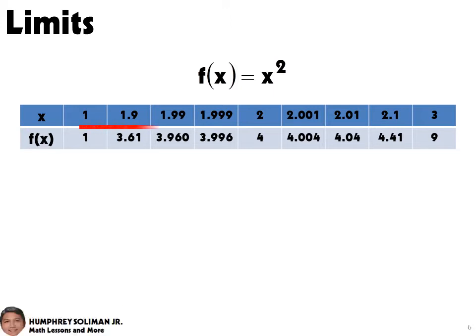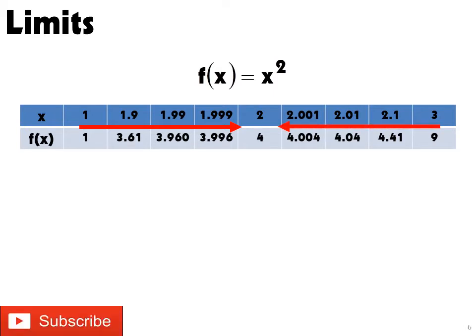From this table, we can say that as x approaches 2 from the left, f of x approaches the value of 4. Also, we can say that as x approaches 2 from the right, f of x approaches the value of 4.